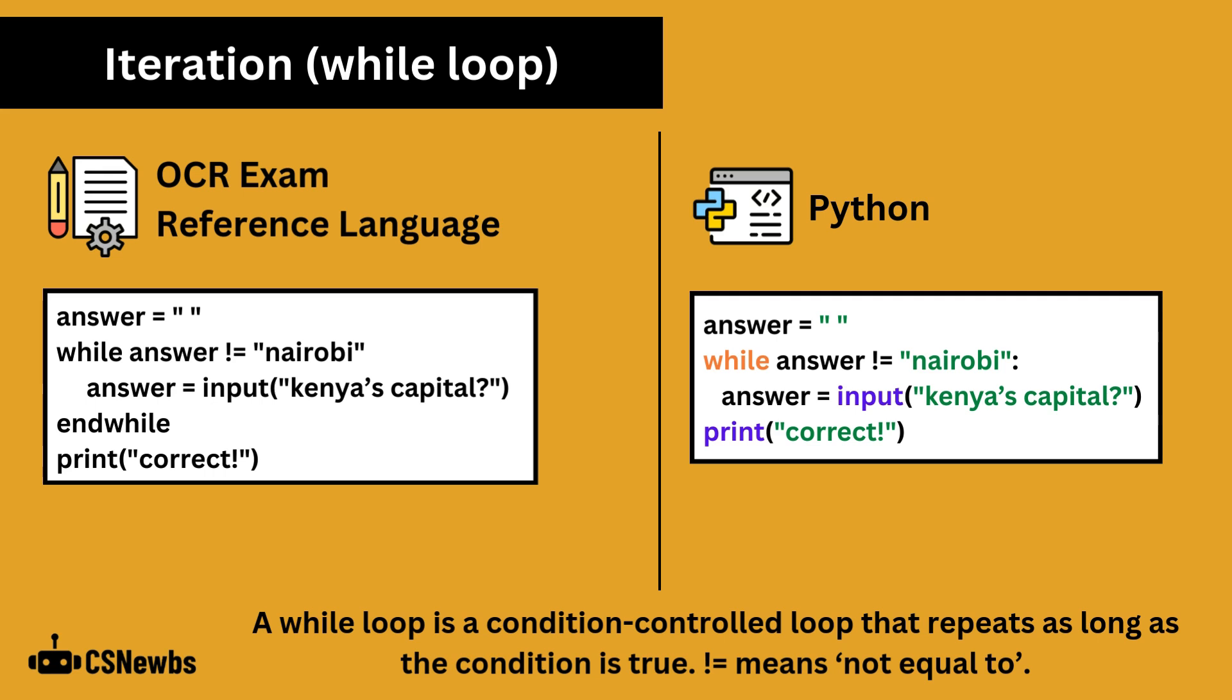A while loop is a condition-controlled loop that repeats as long as the condition is true. Exclamation mark equals means not equal to. This example will check the value of the answer variable, and while it is not equal to Nairobi, will repeat the indented code, which is to input a value. When the condition is no longer true, so when the answer is equal to Nairobi, the loop finishes and moves on to the next line to print correct.